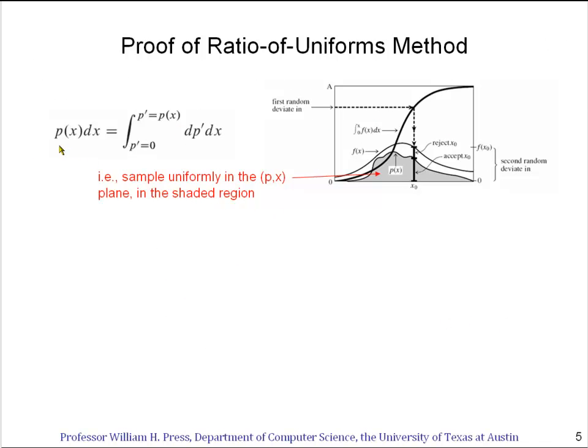I'm going to start by writing down what seems to be a kind of a trivial formula. I'm going to write down that as a function of the variable I'm interested in and the distribution I'm interested in, p(x)dx is equal to an integral of a new dummy variable, p' from 0 to the value p(x) dp' dx. Well, what makes this trivial is that this integral can just be done giving the value p(x), which therefore makes this equation true. But another way of thinking about this form of the equation is it says that there's a plane, a p' x plane in which we want to pick a value of x uniformly in this little square of infinitesimals, dp' dx. So we're getting back at the same idea that we had in the rejection method or in the transformation method of picking uniformly within an area.